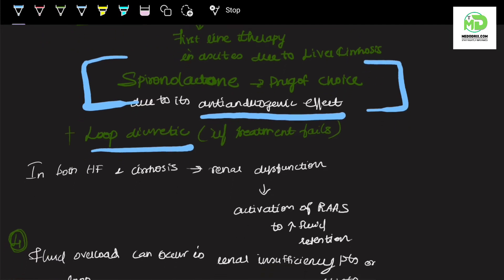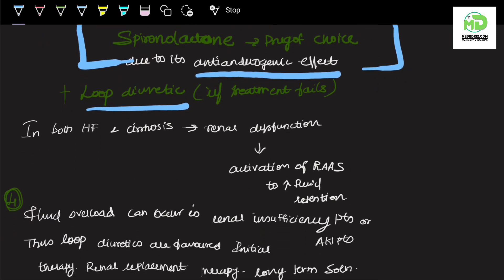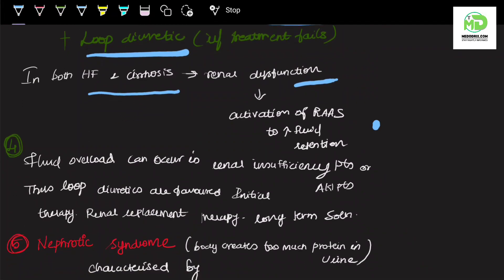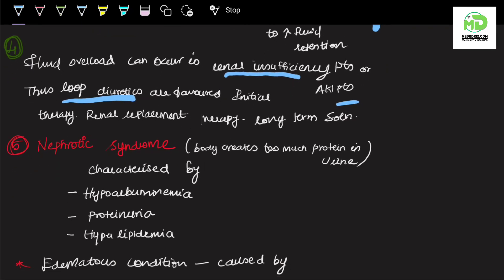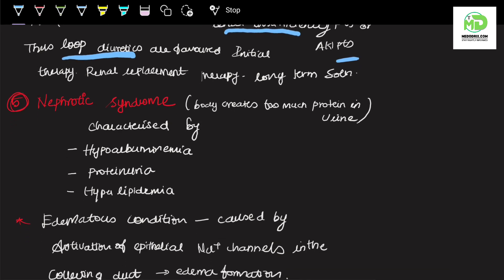When treatment fails in both heart failure and cirrhosis, renal dysfunction takes place, which will ultimately activate the renin-angiotensin-aldosterone system to increase fluid retention. The fourth condition is fluid overload in renal insufficiency or acute kidney injury patients. Thus, loop diuretics are the favored initial therapy. Renal replacement therapy is necessary for long-term solution, but initiation therapy usually starts with loop diuretics.